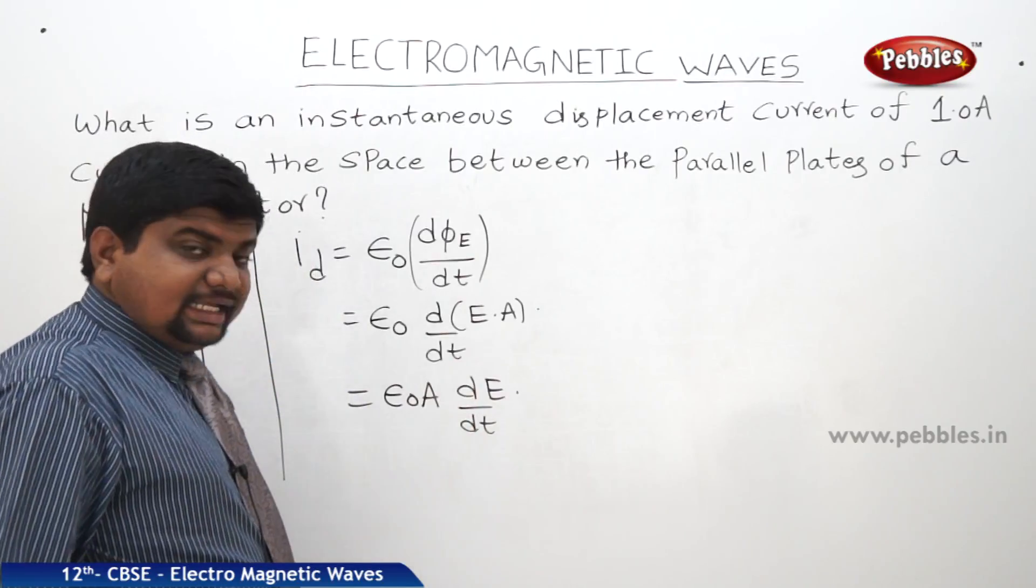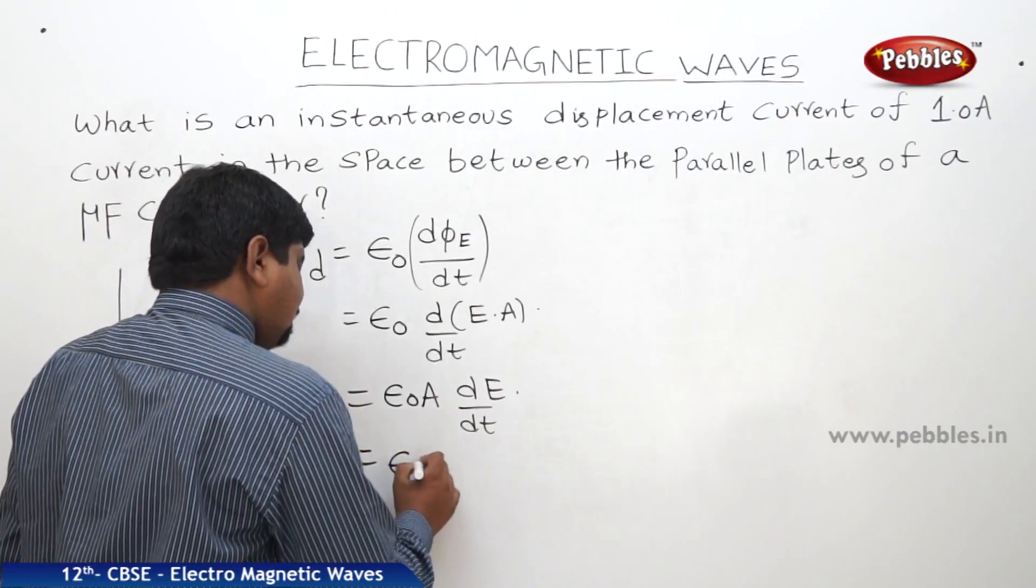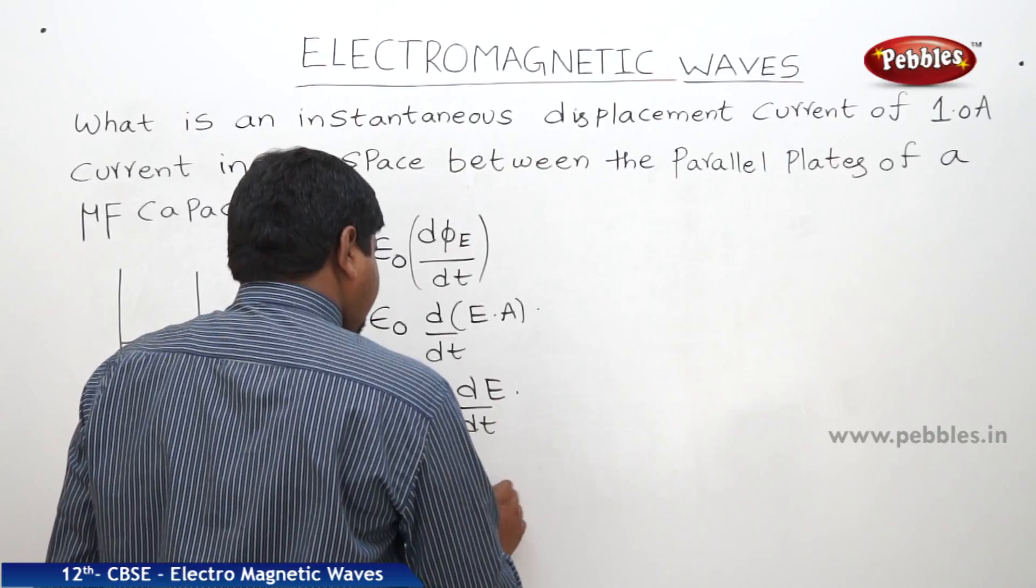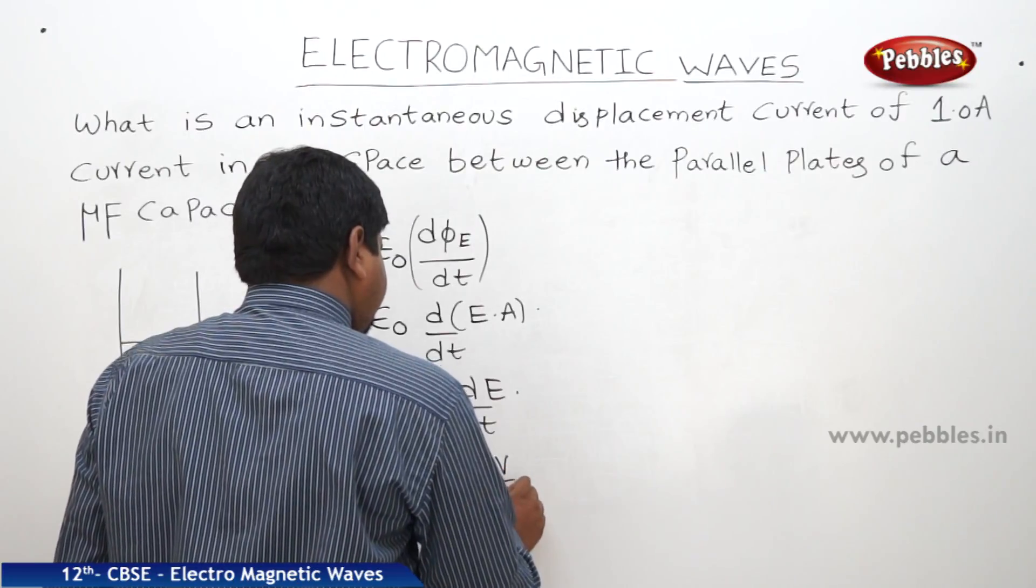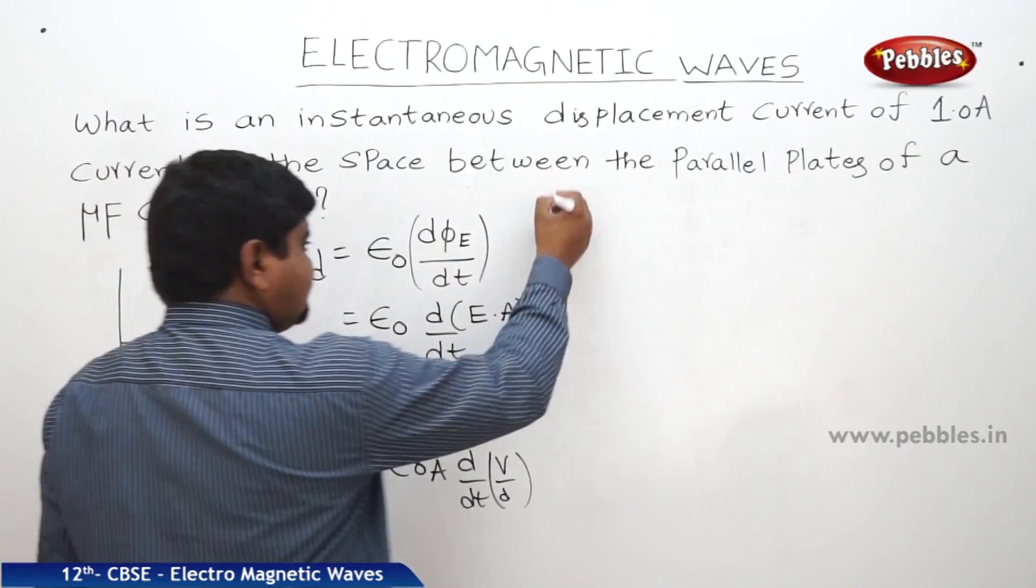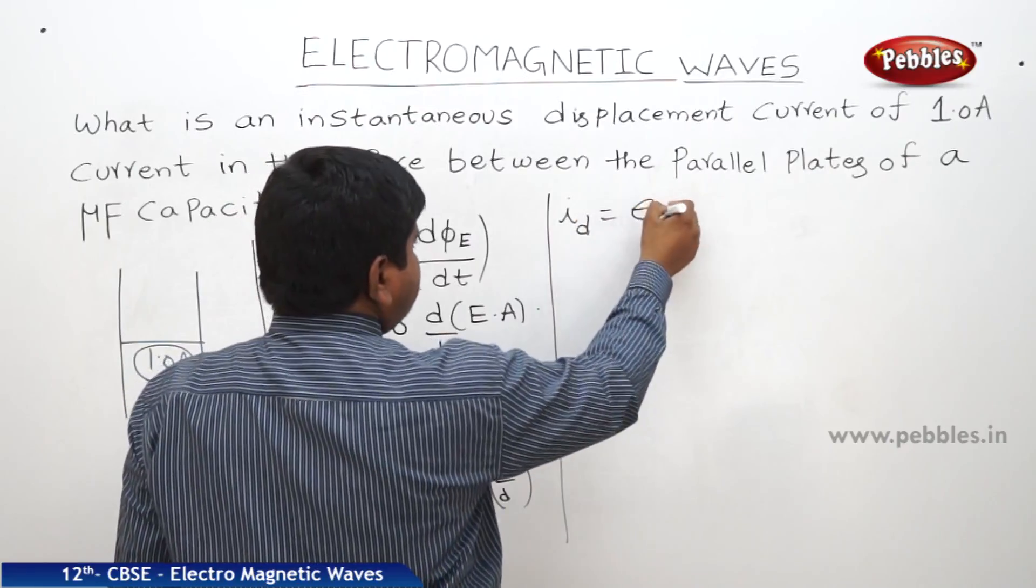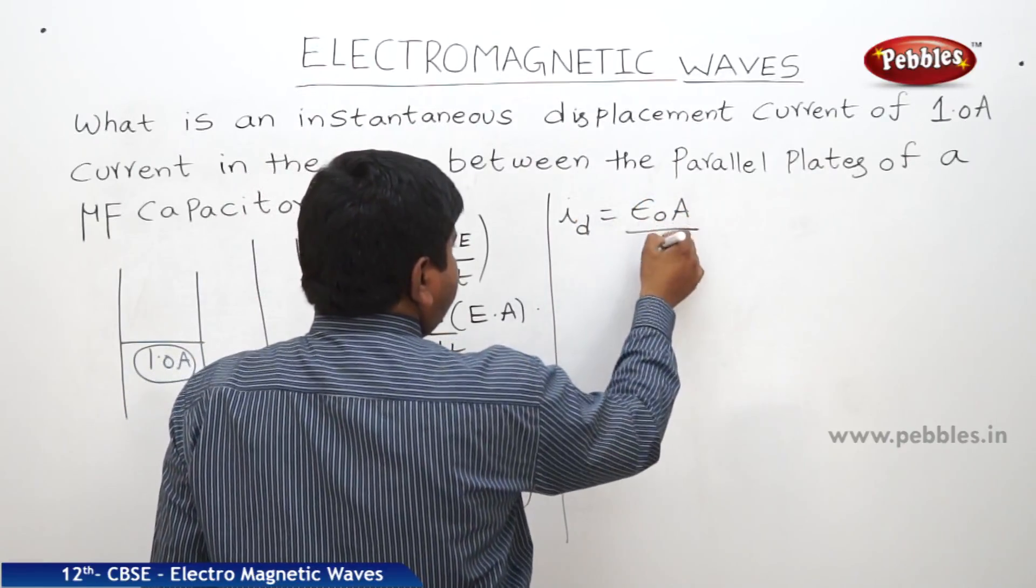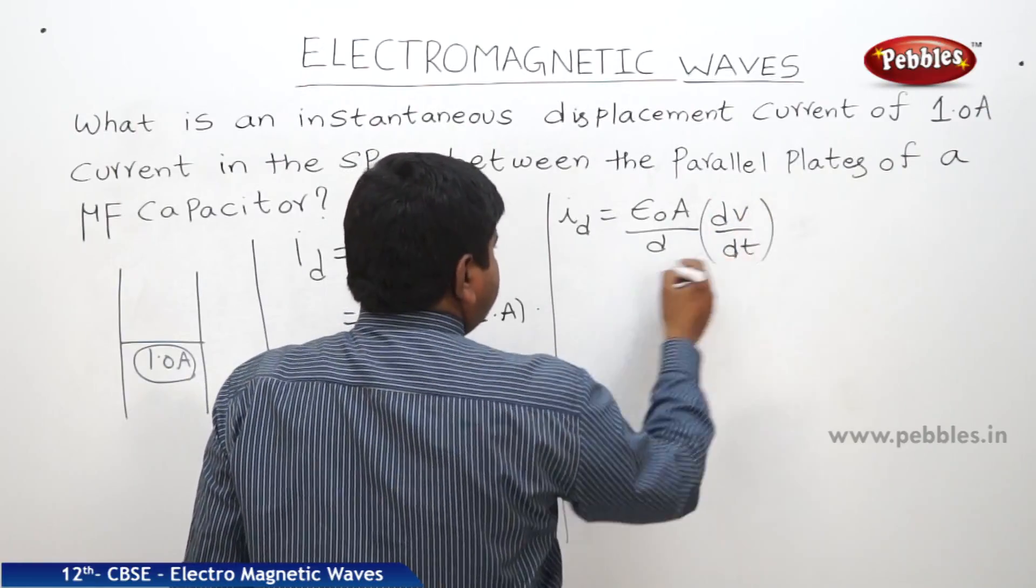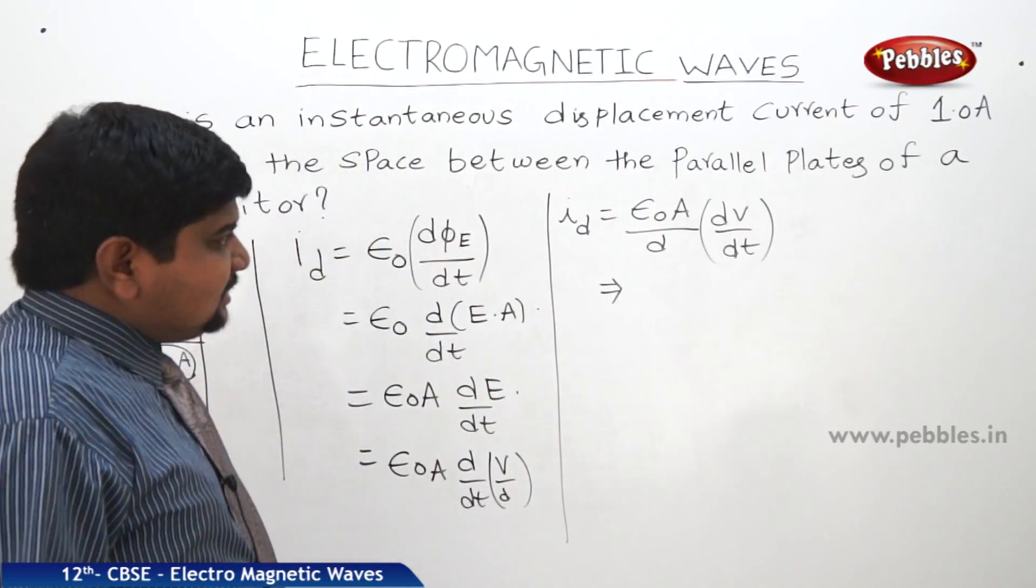And this A I am bringing to forward. Epsilon 0A into D by dt of E. We know that electric field is equal to V by D. Therefore, epsilon 0A into D by dt of V by D. And I am moving the D to the front side. Therefore, Id is equal to epsilon 0A by D into Dv by DT.